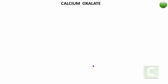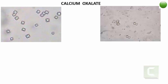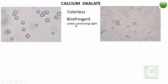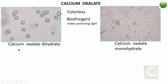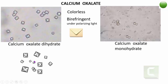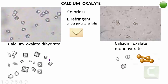The first and most important crystals found in urine are calcium oxalate crystals. These are colorless crystals, and they are birefringent when observed under polarizing light. There are two forms: calcium oxalate dihydrate and calcium oxalate monohydrate. The dihydrate form is the classical envelope-shaped crystal. The monohydrate form is hourglass-like or dumbbell-shaped. Other morphological forms include elongated, oval, and round or spherical shapes.